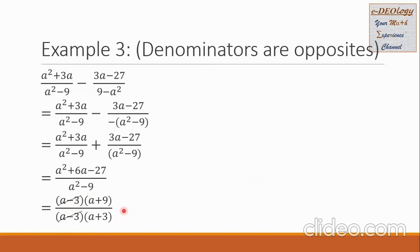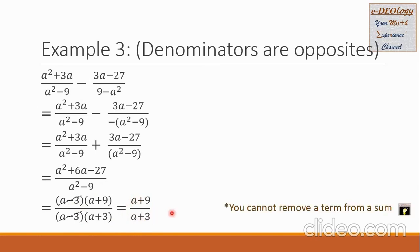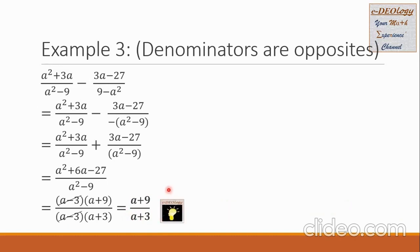After the cancellation, we collect the remaining factors: a plus 9 all over a plus 3. The next question is: can we cancel the a with the a, or the 9 with the 3? The answer is no — we cannot remove a term from a sum. The a and the 9 are part of the sum, grouped together, as are the terms in the denominator. So this is our final answer.